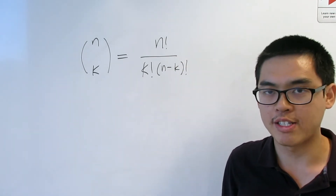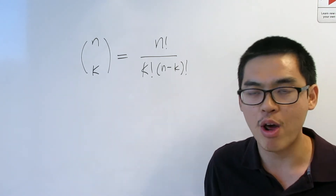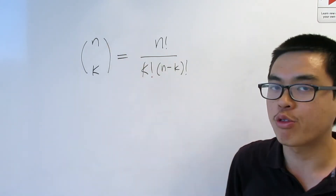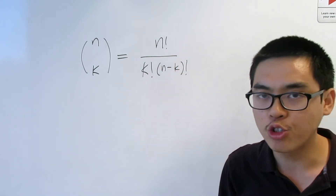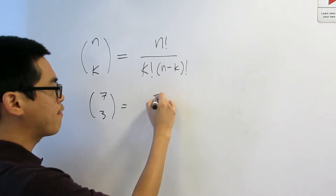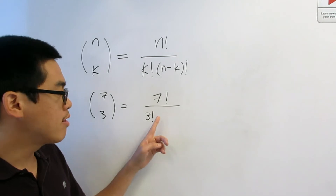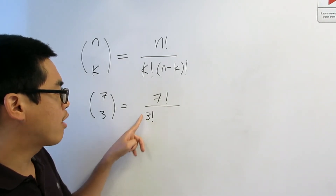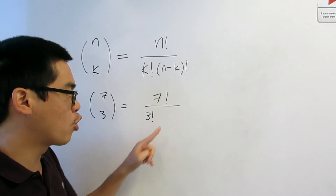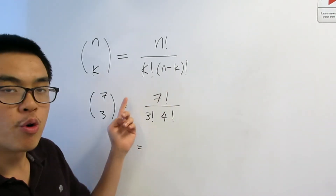Let's do an example. We already computed seven choose three by listing everything out and got 35. So if we plug in N equals 7 and K equals 3 into this formula, the result should be 35. Seven choose three is 7 factorial on top, 3 factorial on the bottom. A helpful memory trick: the other factorial should add up to the top number — we have 7 on top and 3 on bottom, so we need 4 factorial on the bottom as well.